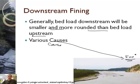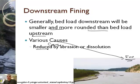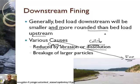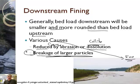Scientists actually debate about what causes downstream fining. There are two main causes: it can be reduced by abrasion or dissolution. As particles bump into each other and collide, that breaks them into smaller and smaller pieces. Abrasion is when they get kind of sanded down, like taking sandpaper to something. But most river scientists are of the opinion that it's primarily breakage — a rock hits and breaks into two particles, then those break into smaller ones, and so on.